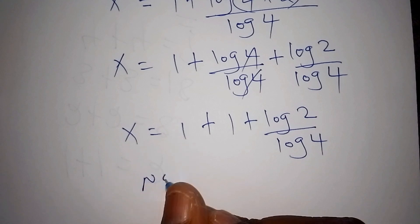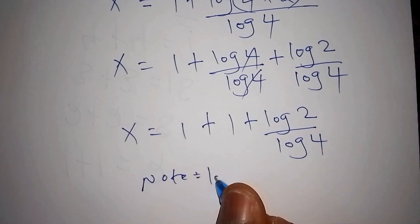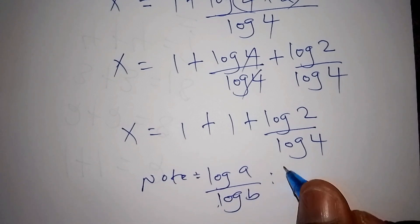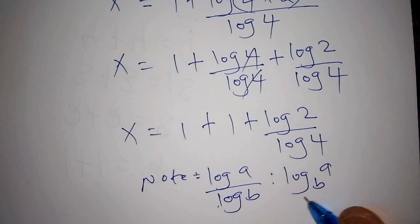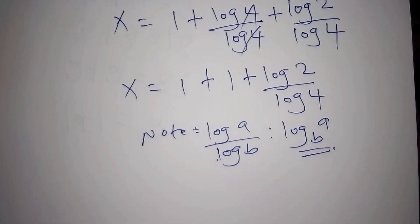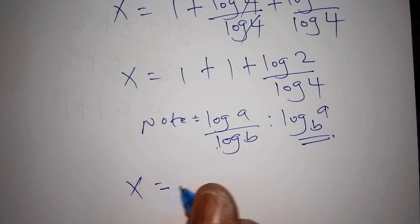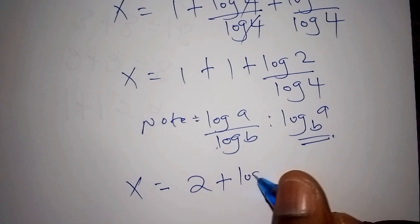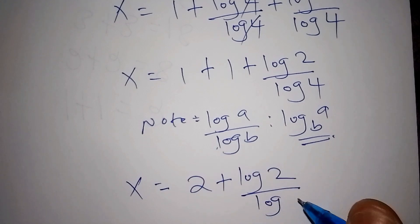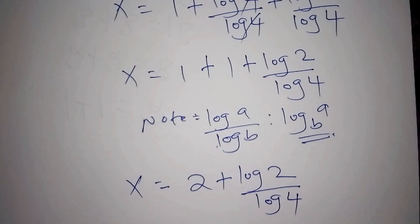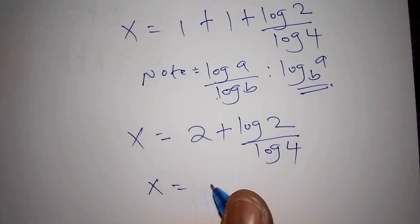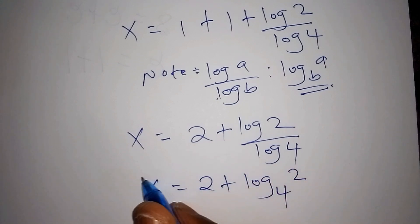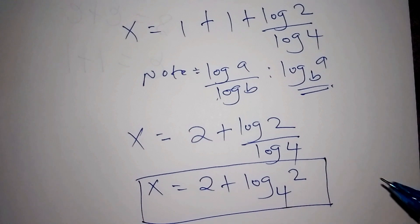Note that according to the laws of logarithms, when we have the log of a all over the log of b, this can also be written as the log of a to the base of b. So in this case we conclude: x is equals to 1 plus 1 is 2, plus the log of 2 all over the log of 4. Therefore x is equals to 2 plus log 2 to the base of 4. This is our value for x.